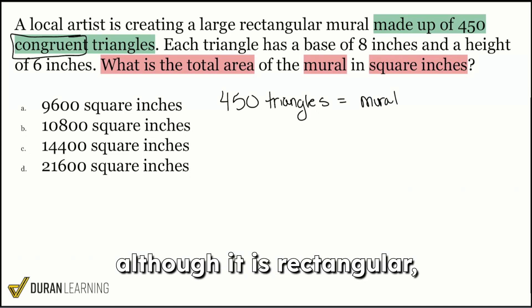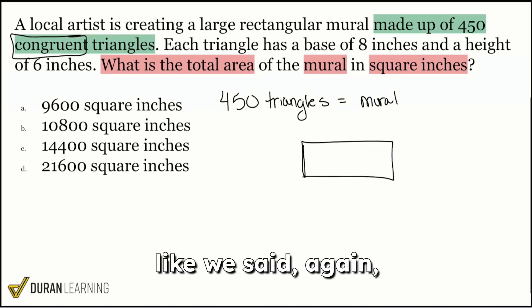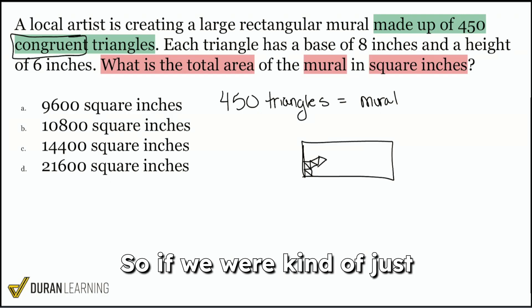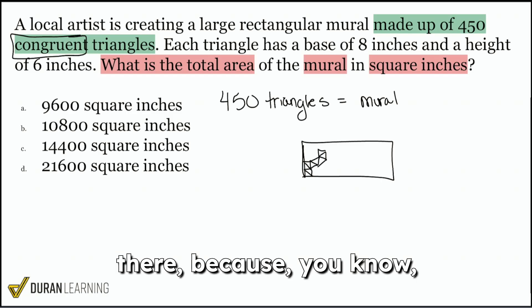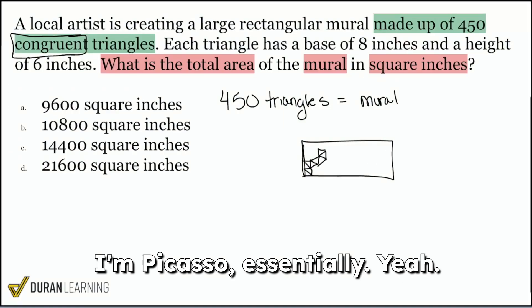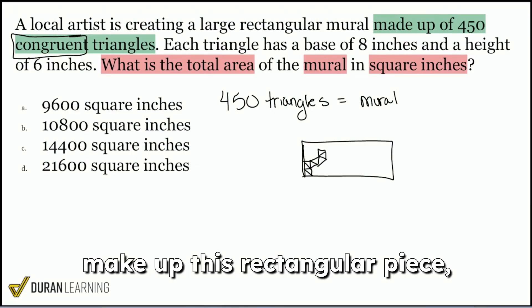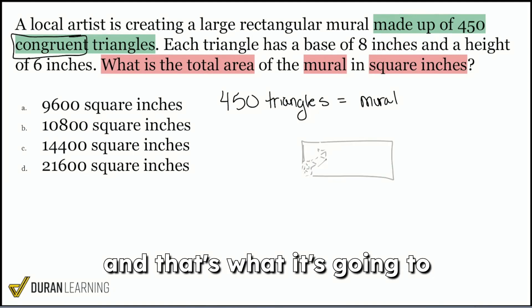So the mural, although it is rectangular, like we said, again, it's made up of 450 of these triangles. So if we were kind of just drawing it out, like you see there, because you know I'm Picasso, essentially. Yeah, you have a ton of triangles that make up this rectangular piece, and that's what it's going to be. Okay.